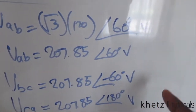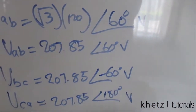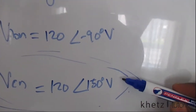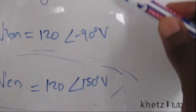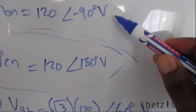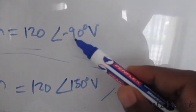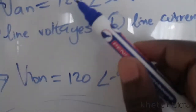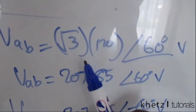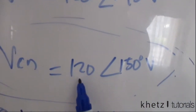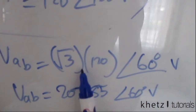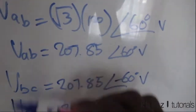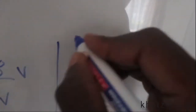So here are all the line voltages. After finding the phase voltages and noting that line voltages lead their corresponding phase voltages by 30 degrees, you add 30 degrees to each phase angle and compute the magnitude by multiplying the phase voltage magnitude by the square root of 3. After doing that you have all your line voltages. That's the first part of the question.